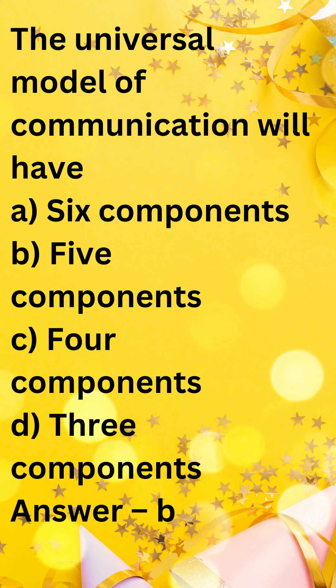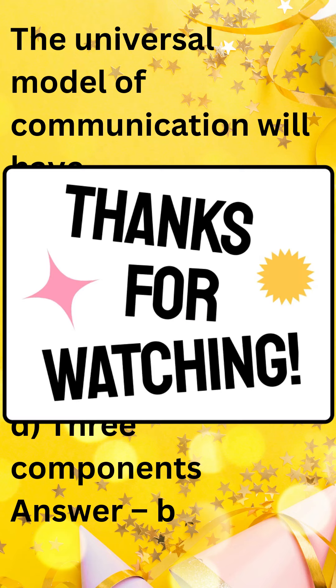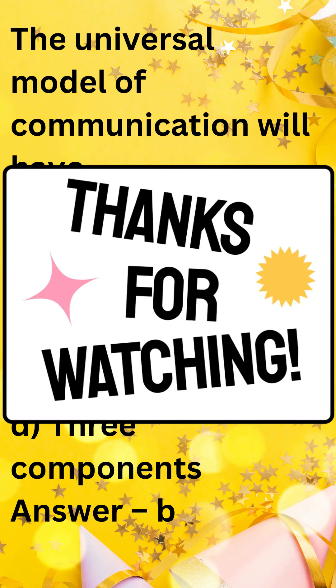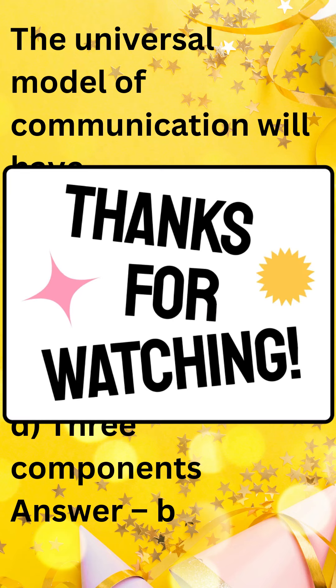5. Destination — This is where the message is received and interpreted. This could be another person, a computer, or any other entity that can understand the message. Therefore, the universal model of communication has 5 components.